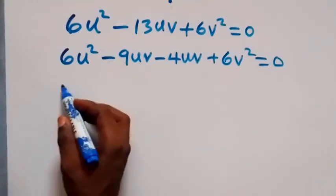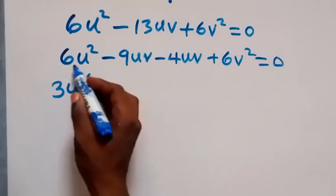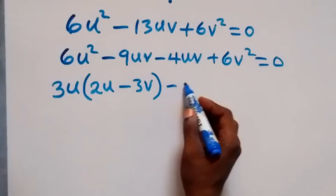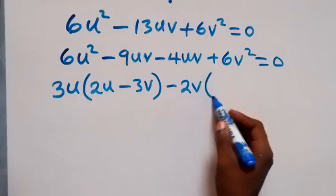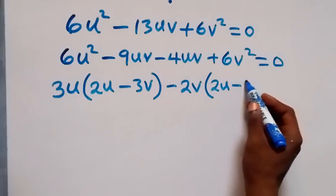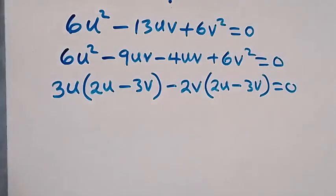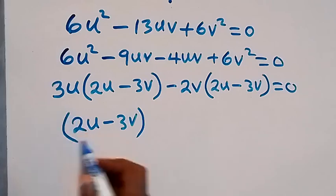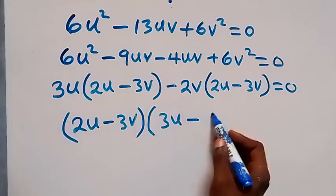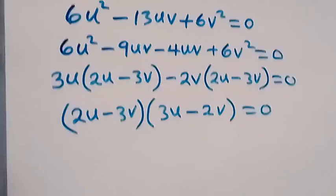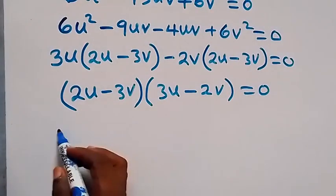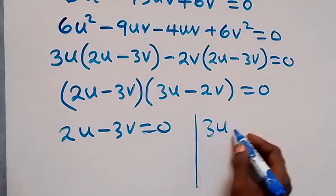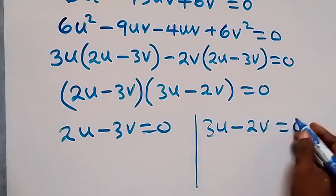Factoring by grouping: from the first two terms, factor out 3u to get 3u(2u minus 3v). From the last two terms, factor out minus 2v to get minus 2v(2u minus 3v). So we have (2u minus 3v)(3u minus 2v) equals 0. This gives two possible cases: either 2u minus 3v equals 0, or 3u minus 2v equals 0.